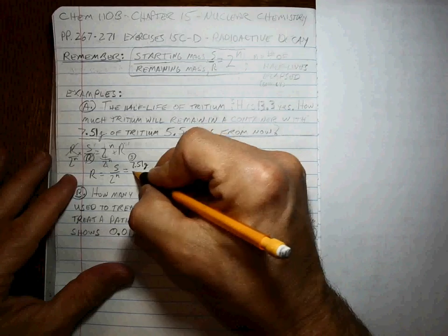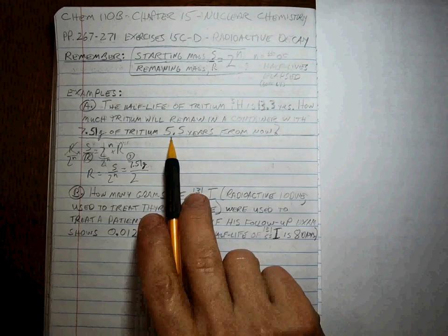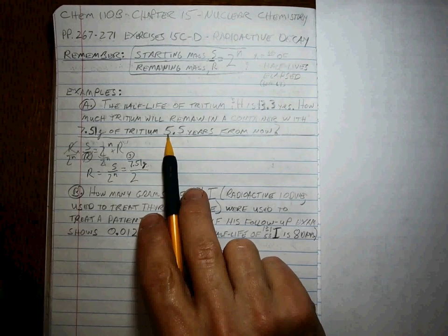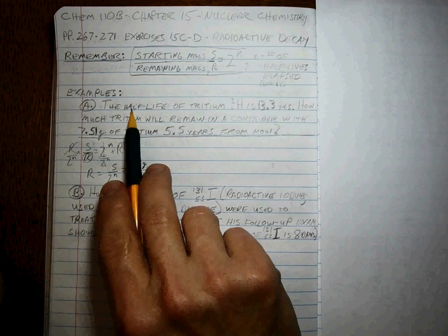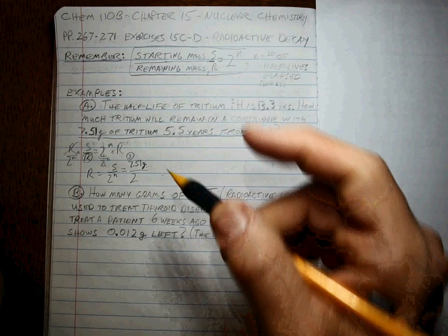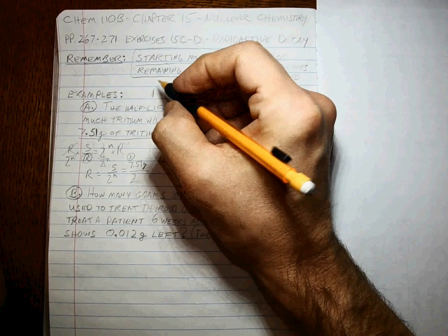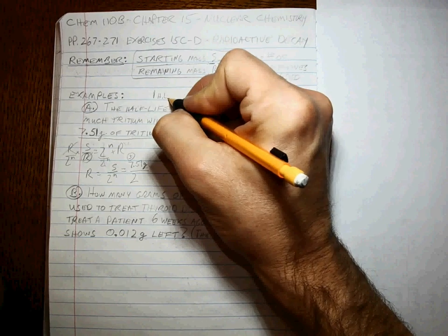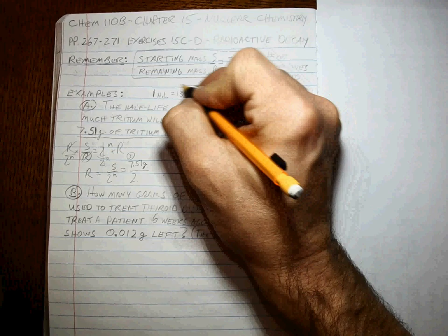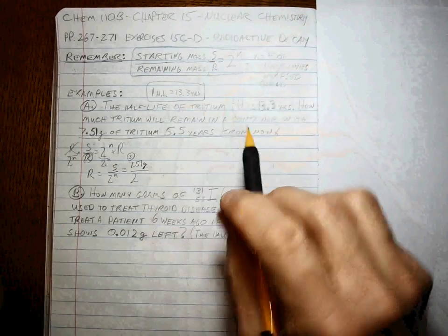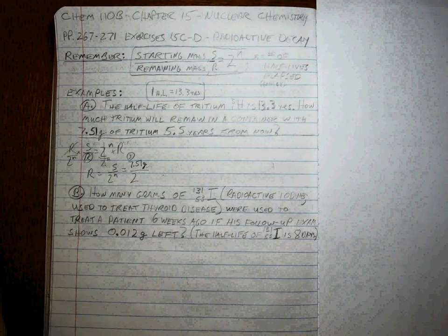What we have to figure out here is what N is. So what is N? N is the number of half-lives that go by in 5.5 years. Notice that when they say the half-life of tritium is 13.3 years, that's saying, in word form, this conversion factor. Does everybody see that? The half-life of tritium is 13.3 years. That means one half-life is 13.3 years.